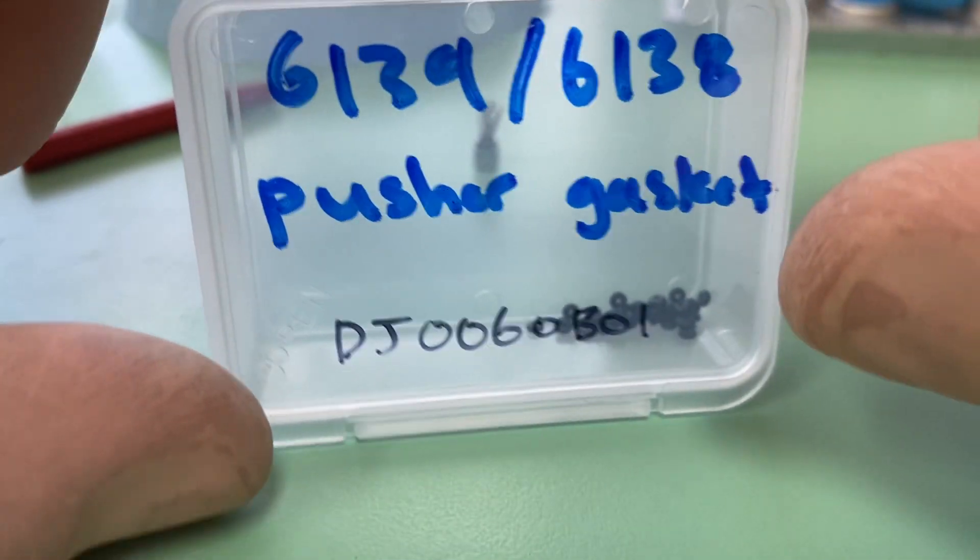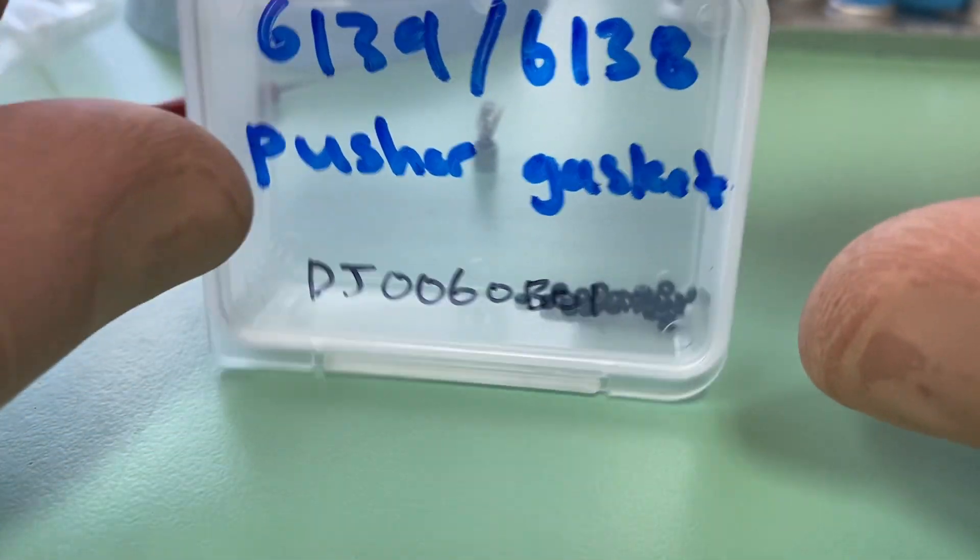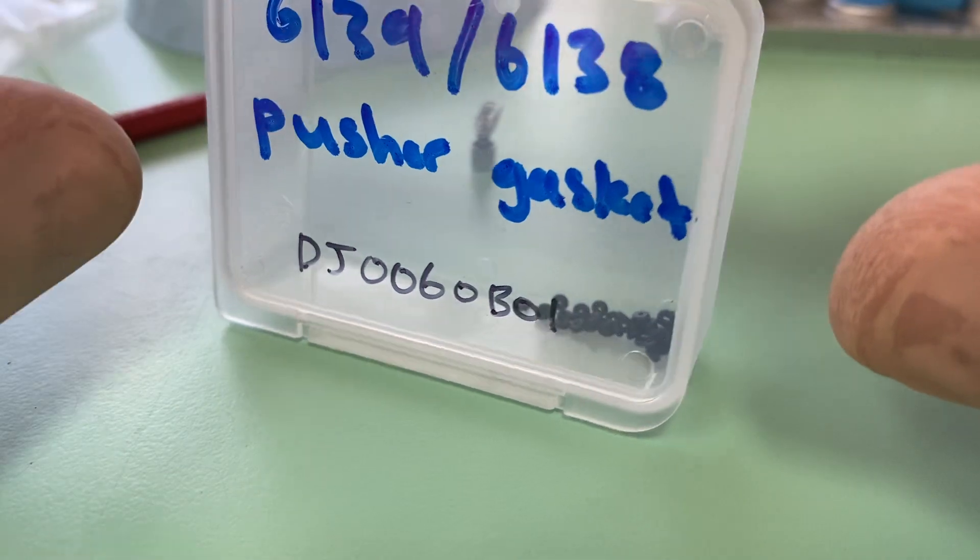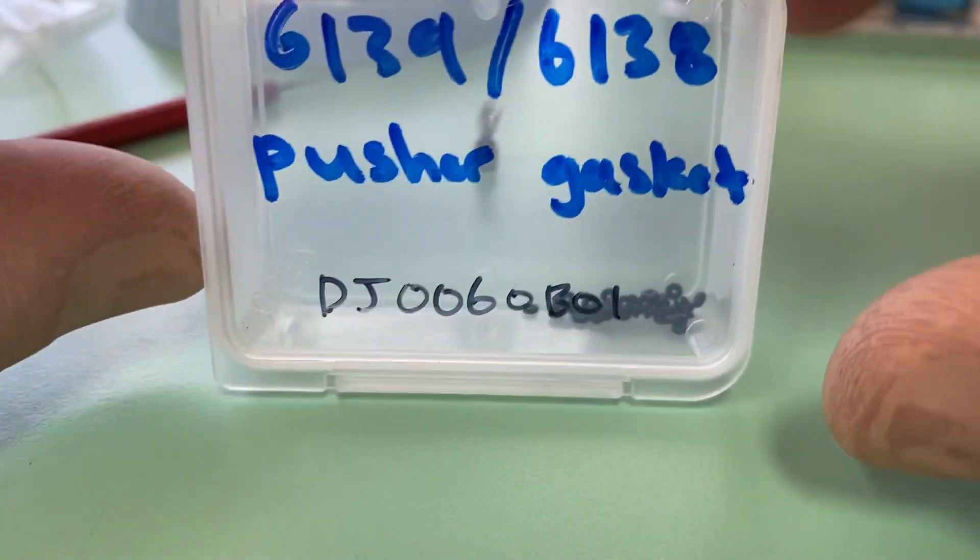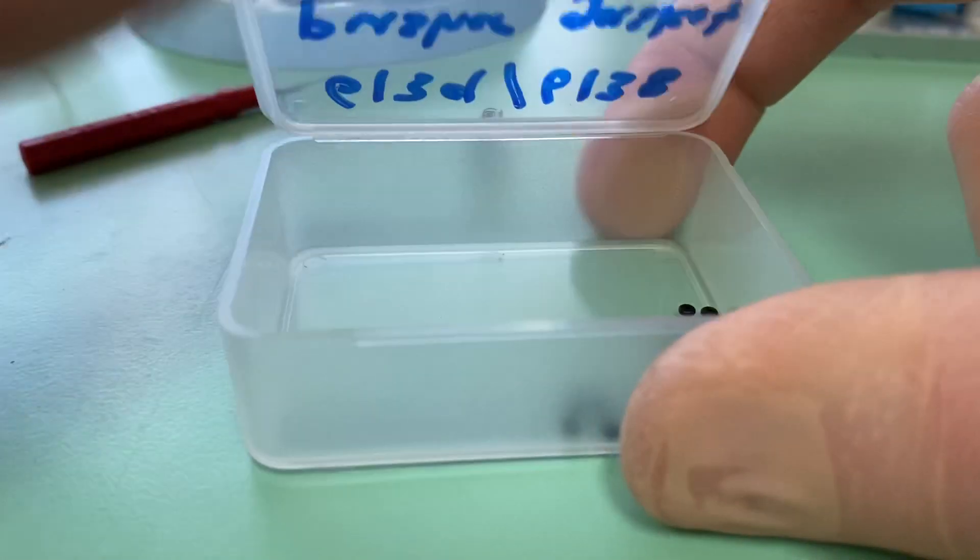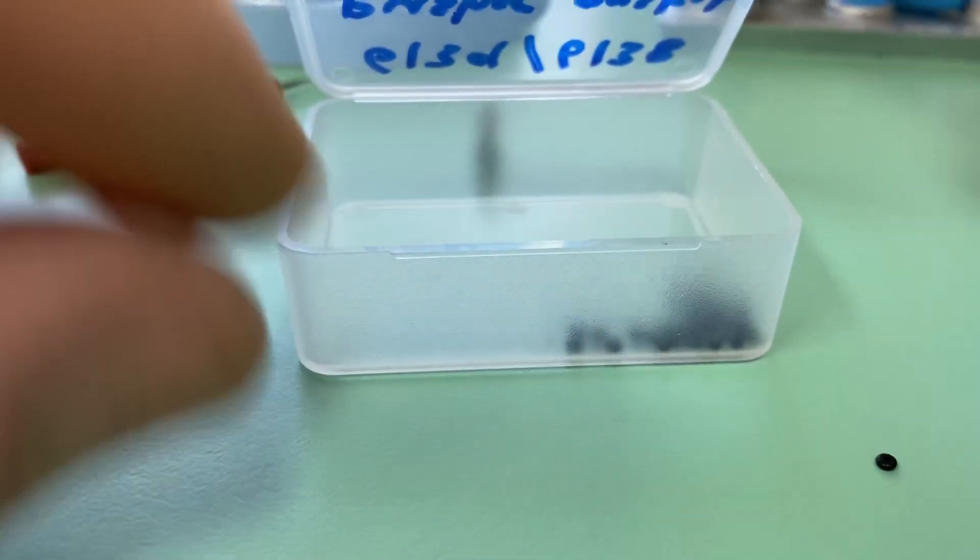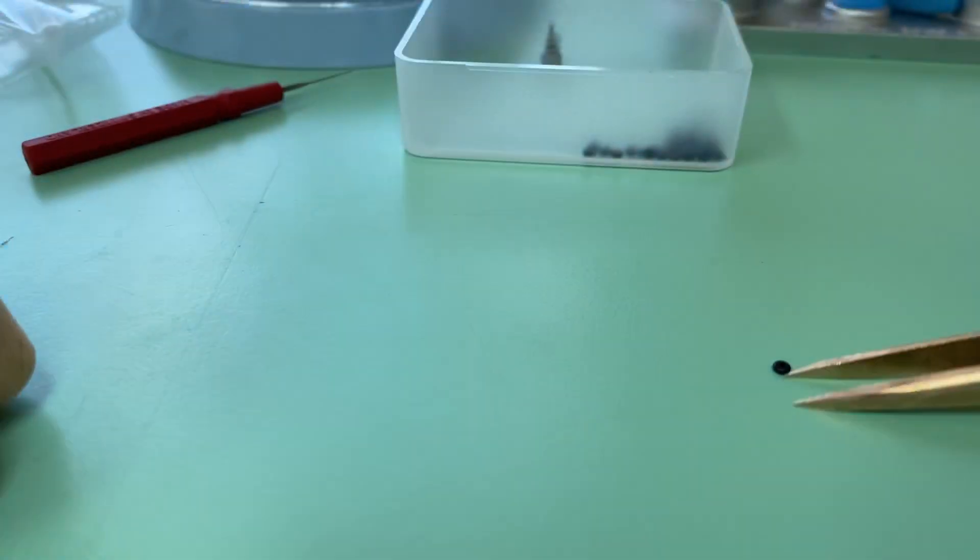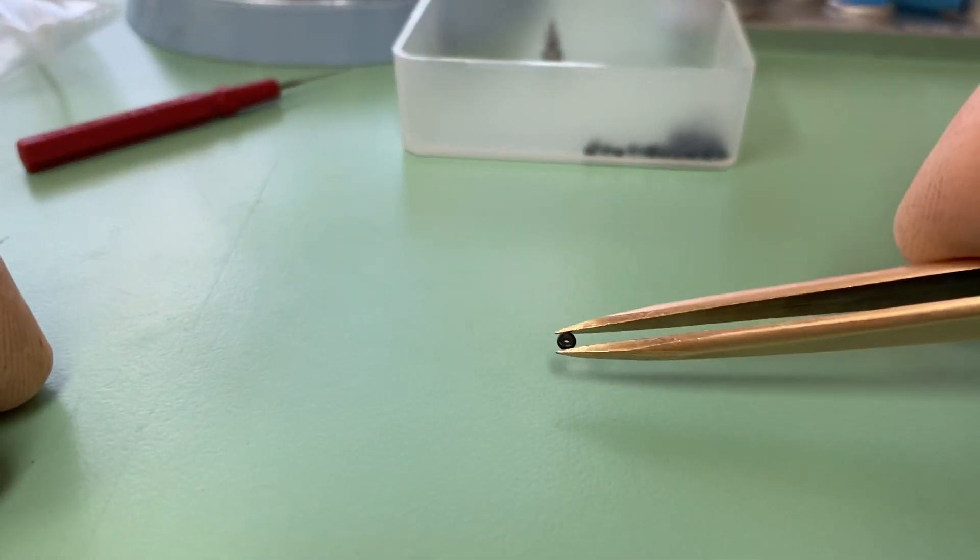Here we have my stock of 6139 6138 pusher gaskets. The Seiko reference is DJ0060B01. Now what's so specific about these gaskets, when we open them up and see, is that they're called a D-shaped gasket. They're not an O-ring. They have a D-shaped profile.